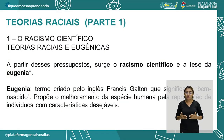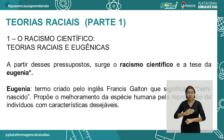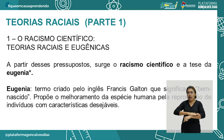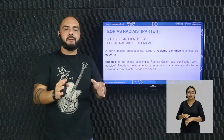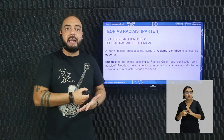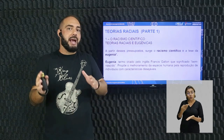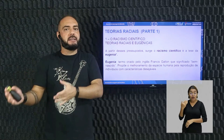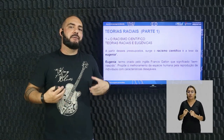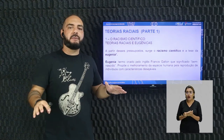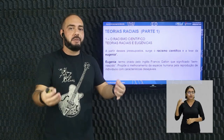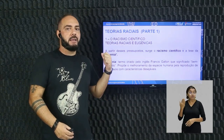A partir desses pressupostos, surge o chamado racismo científico e a tese da eugenia. Racismo científico é o preconceito racial validado pelo estudo científico da época. A ciência daquele momento é diferente da ciência atual — por conta da evolução científica e da genética, essas ideias não têm mais legitimação científica. A ciência hoje não defende mais essas ideias, mas é importante saber que elas existiram e eram validadas pelo conhecimento científico daquela época.